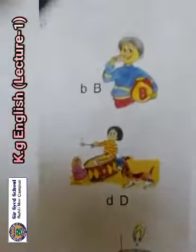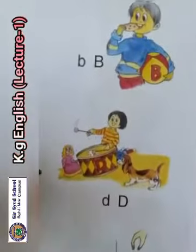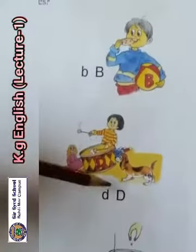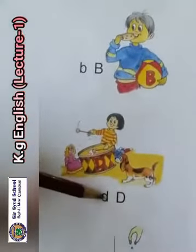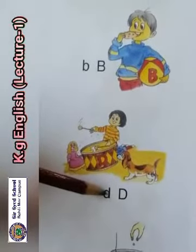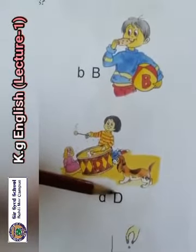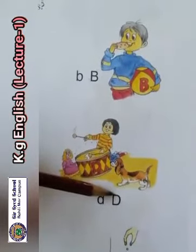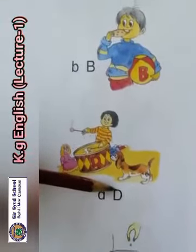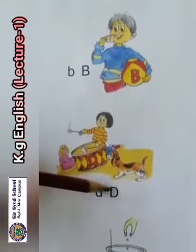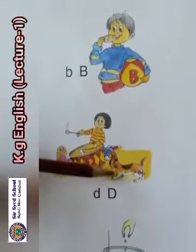The fourth letter is D. Capital D, small d. The sound of D is 'd'.